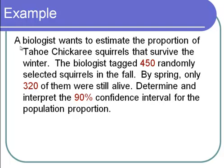Here's another example. A biologist wants to estimate the proportion of Tahoe chickaree squirrels that survive the winter. The biologist tagged 450 randomly selected squirrels in the fall. By spring, only 320 of them were still alive. We need to determine and interpret the 90% confidence interval for the population proportion. This is a proportion question because it's a yes-or-no question: either the squirrel is alive or dead — not kind of alive.